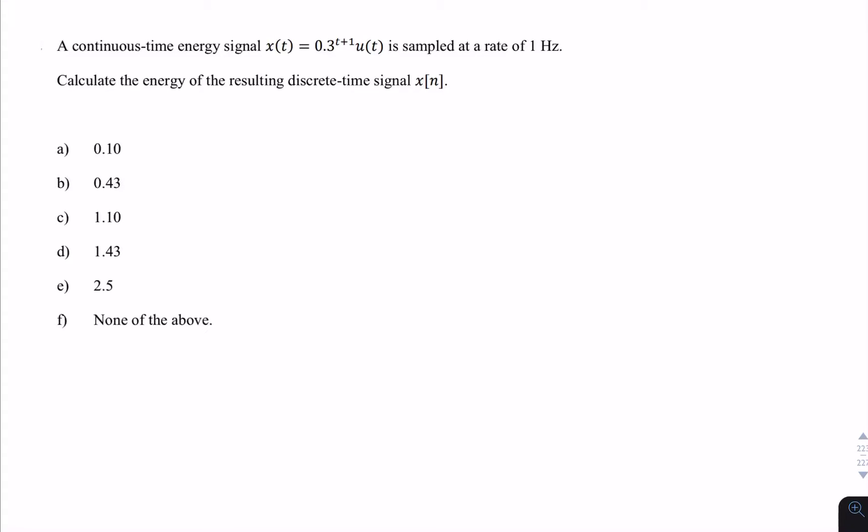This was an exam question in 2014-15. There was a multiple-choice question, question 2. Here we're given a continuous time signal and we're told that it's sampled and we're asked for the energy of the resulting discrete time signal.